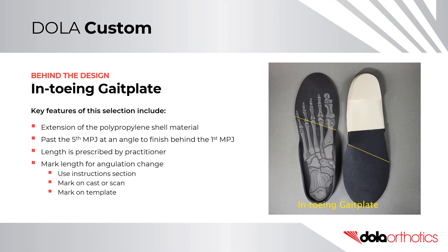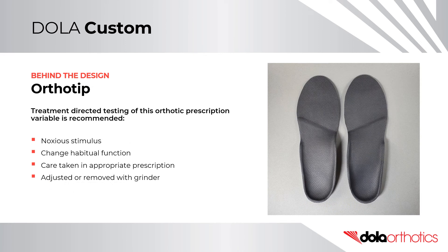Key features of an in-toeing gait plate include an extension of the front edge of the orthotic shell past the fifth MPJ and at an angle to finish behind the first MPJ. The length of the gait plate is prescribed by the practitioner based on the angulation change required. You can indicate the length using the instruction section, marked on a cast or scan, or marked on a template. Ortho Tip: A gait plate is a noxious stimulus that acts to change a habitual pattern by making usual function or gait pattern feel uncomfortable. Care must be taken in the appropriate prescription of this orthotic shell shape.